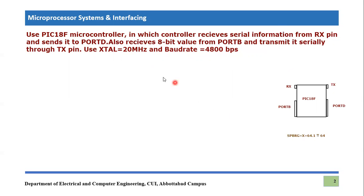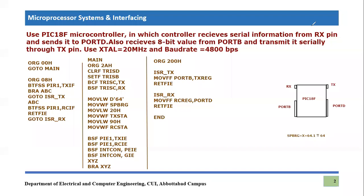Using that specific baud rate and crystal oscillator, we apply the SPBRG formula discussed in previous lectures. The evaluated value for the SPBRG register is 64.1, which is approximated as the integer 64. So 64 is the value we will use in the SPBRG register. Let's write the code.